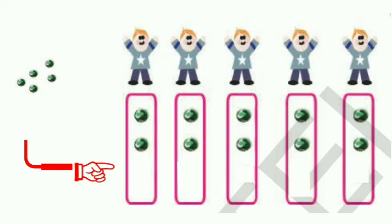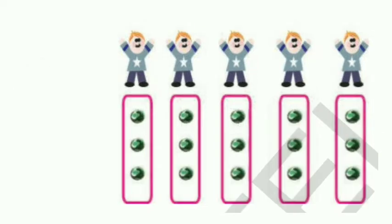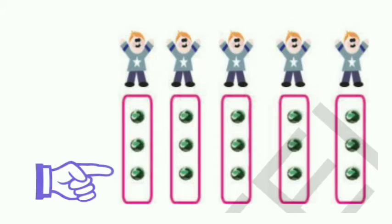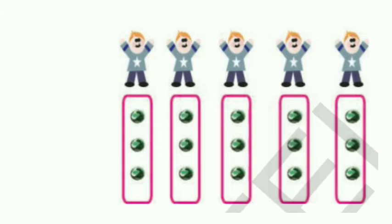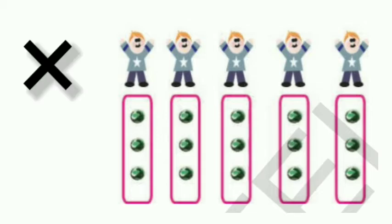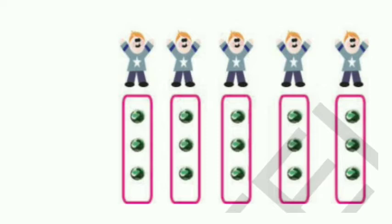Now children, let us take five more marbles and distribute them equally by giving one marble to each. Dear children, tell me how many marbles have we distributed? Very good — five marbles we distributed that time also. Then how many marbles remained now? We have no marbles remained here. Zero marbles.